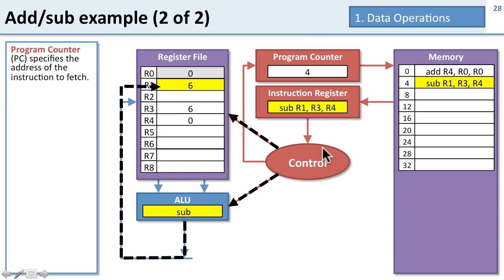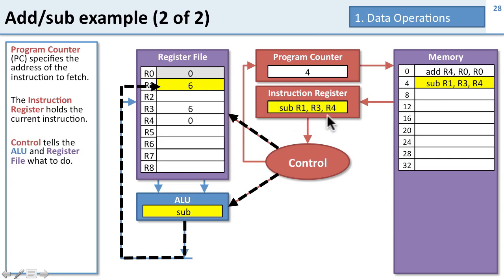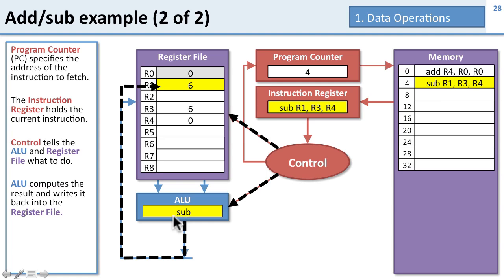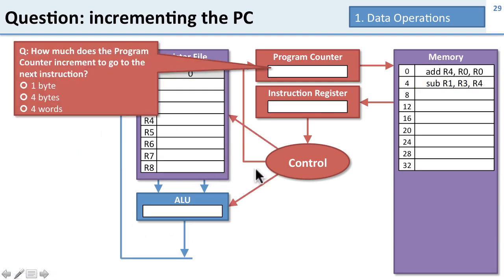So what do we have here? We have the program counter, which specifies the address of the instruction to fetch. We have an instruction register, which holds the current instruction we're working on. We have a control unit, which decodes the instruction and tells the register file and the ALU what to do. The ALU computes the result and writes it back into the register file, and then the control logic continues to the next instruction.